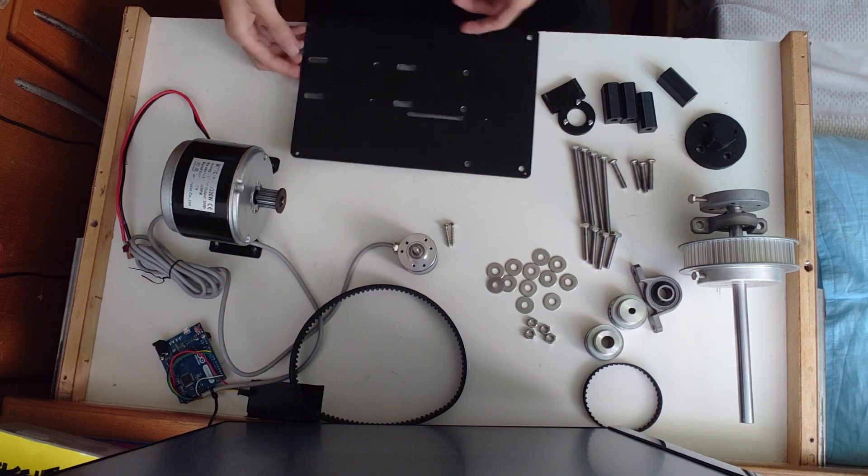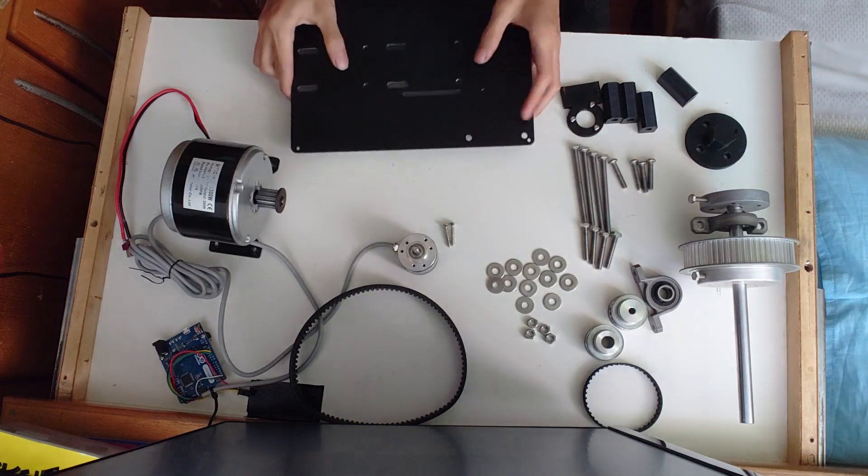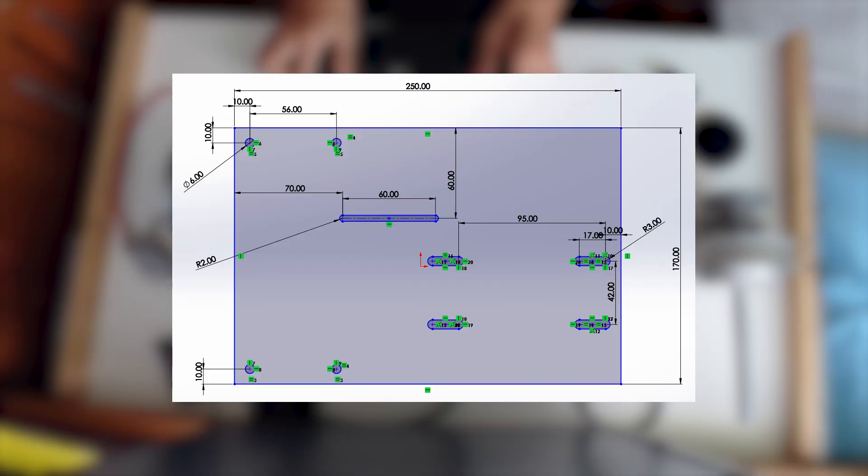The first part is the base. Here I use a 3mm steel plate with particles on it, but it still flexes quite a bit, so I would recommend a thicker steel plate or a thicker wooden board.